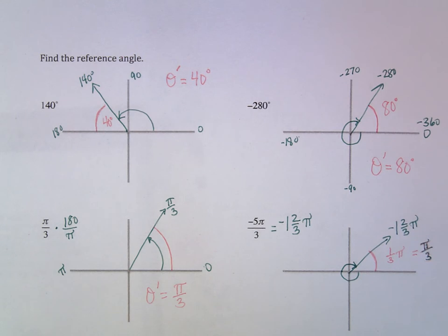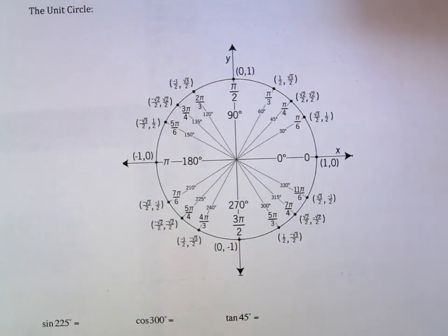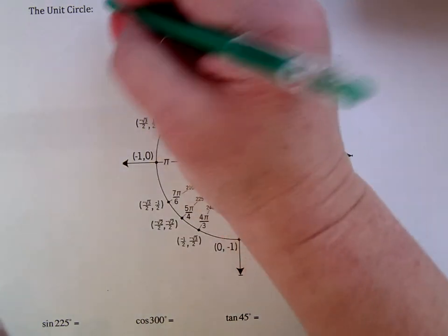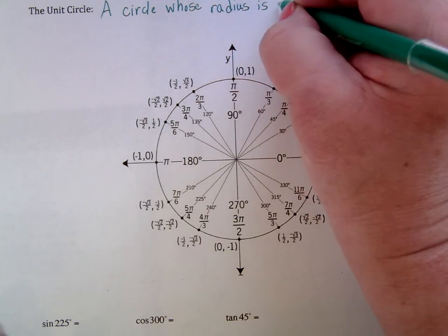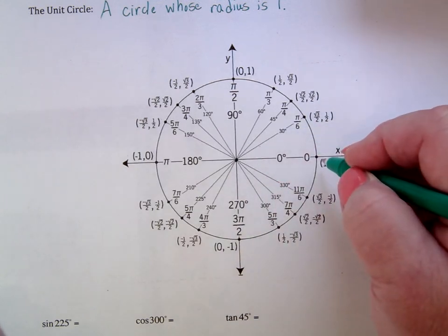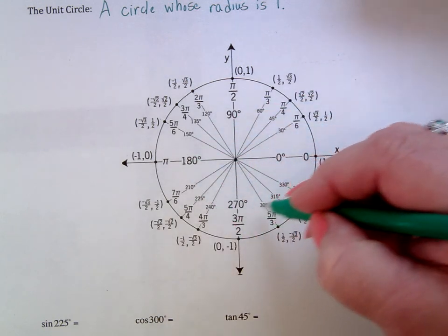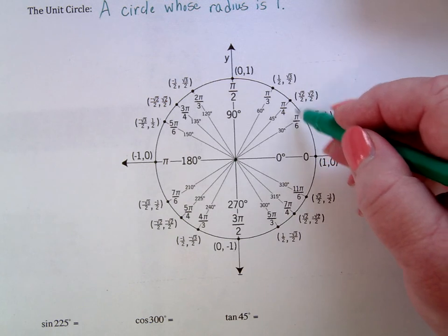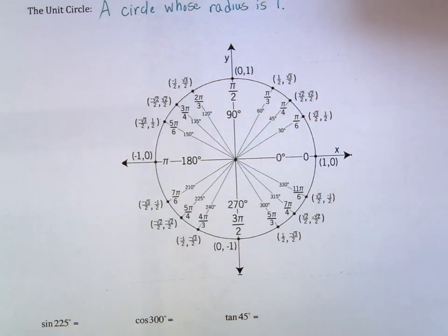That's a quick overview of reference angles — different from reference triangles, it's how far to the closest x-axis. Now we move to the unit circle. The unit circle is a circle whose radius is 1. From the center to any point on the edge, the distance is always 1. It has angles in degrees all the way around, their radian equivalents, and coordinates matched up at each angle.